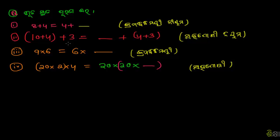Here we are going to fill up the problem. We will ask that 8 plus 4 is equal to 4 plus something. We will find the missing value. We will find that 8 plus 4 is equal to 4 plus what. We will find the 4, and we will have the 8.